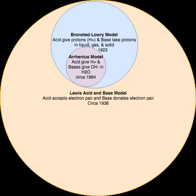Thus, in modern times, the symbol H+ is interpreted as a shorthand for H3O+, because it is now known that a bare proton does not exist as a free species in aqueous solution. An Arrhenius base is a substance that dissociates in water to form hydroxide ions; that is, a base increases the concentration of OH− ions in an aqueous solution. The Arrhenius definitions of acidity and alkalinity are restricted to aqueous solutions. Under this definition, pure H2SO4 and HCl dissolved in toluene are not acidic, and molten NaOH and solutions of calcium amide in liquid ammonia are not alkaline.